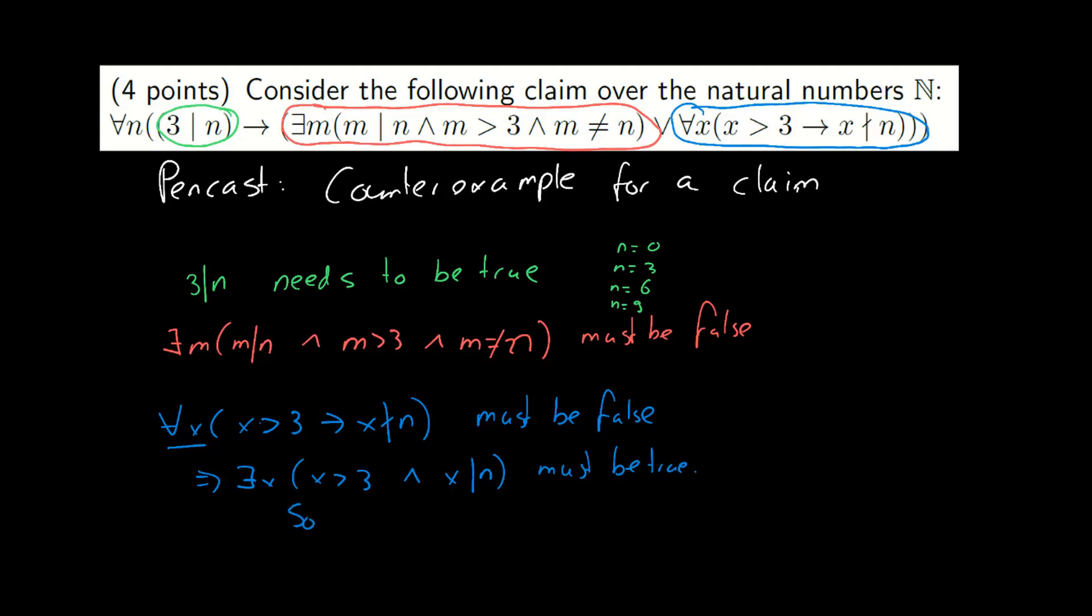So what does this mean for us? Well, it means that we need a divisor larger than 3. So when we consider our options for n in a moment, we should keep in mind that there needs to be at least one divisor larger than 3.